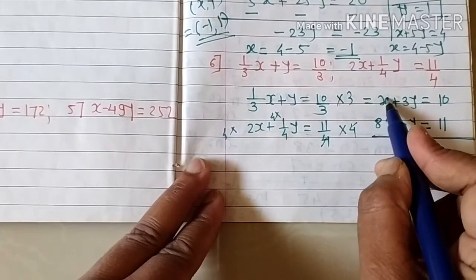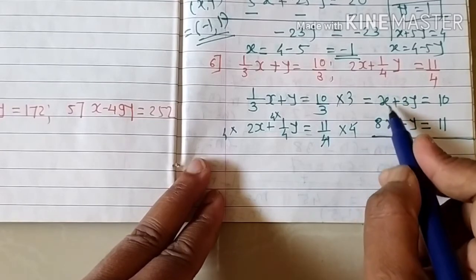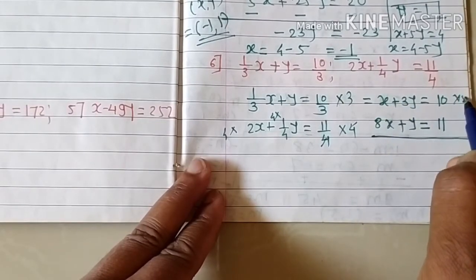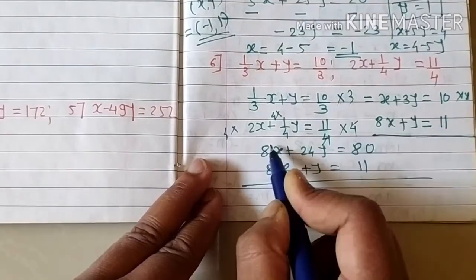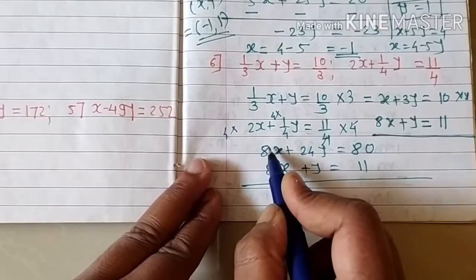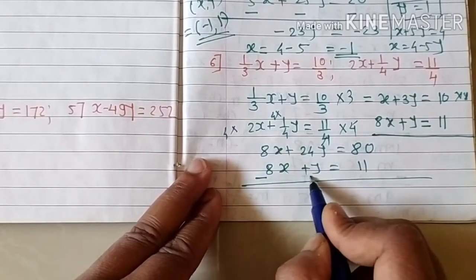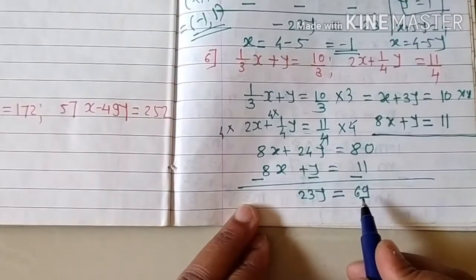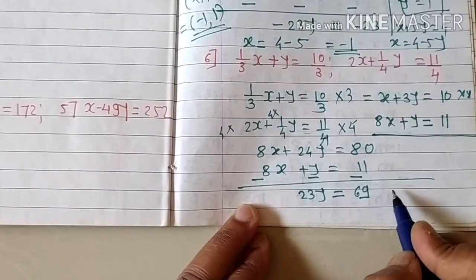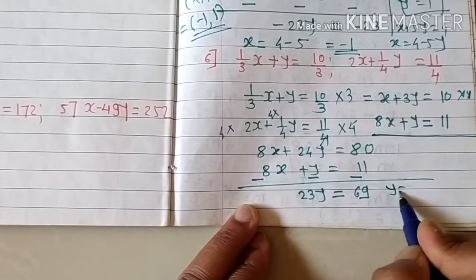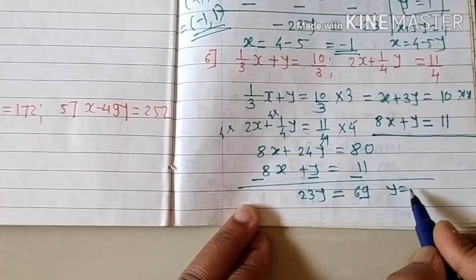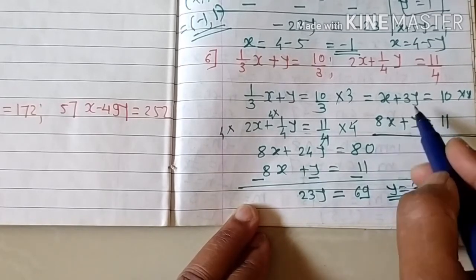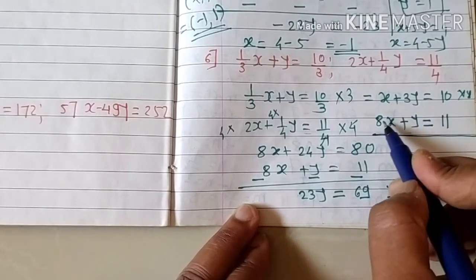Make the coefficient of x the same by multiplying the first equation by 8. Same coefficient and same sign, so take subtraction. The x terms cancel, leaving 23y equals 69, giving y equals 69 divided by 23, which is 3.